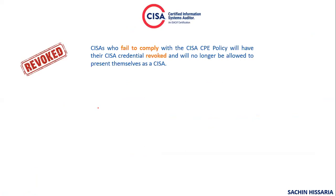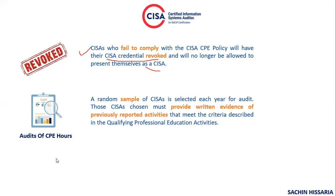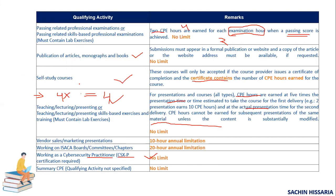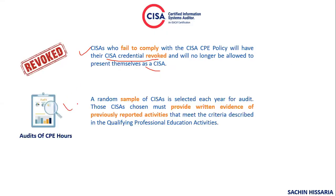Now you might be thinking: what happens if you don't comply with the CISA CPE policy? If you fail to comply, ISACA has the right to revoke your CISA certification and you cannot use the CISA designation on social media or anywhere else. ISACA also conducts random audits — on a sample basis they select candidates and ask for proof of the CPE claims you have reported on your portal, so you need to maintain evidence.